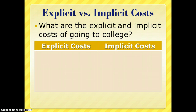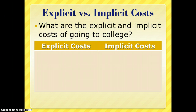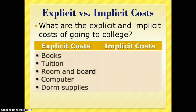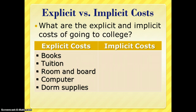We can think about implicit and explicit costs in terms of going to college. Explicit costs are the things you pay money for: fees, tuition, books, room and board, computers — whatever it is that you buy.